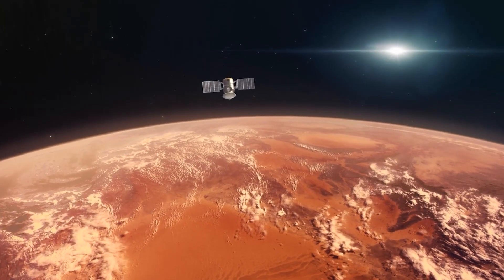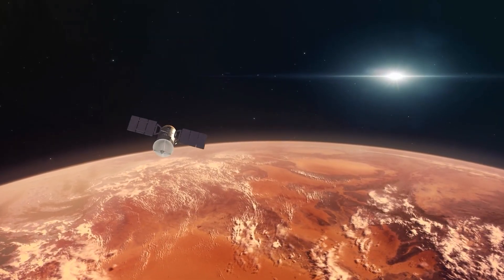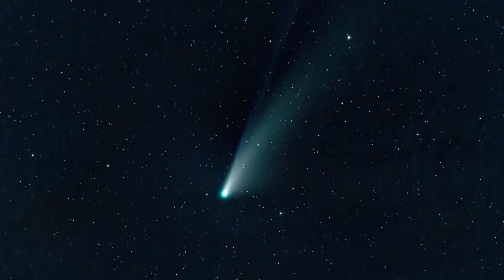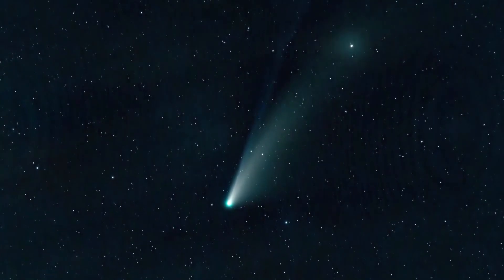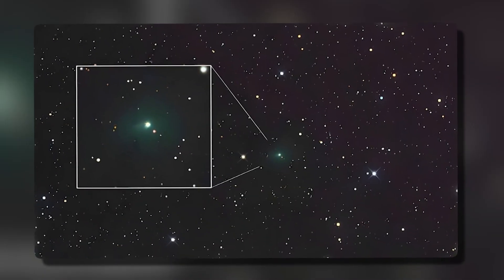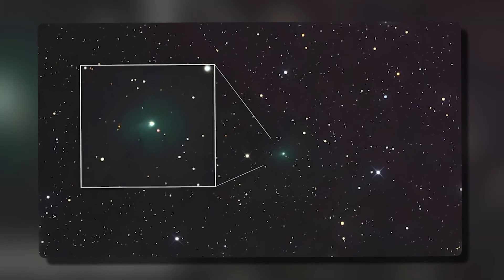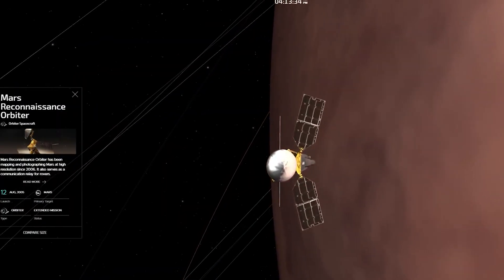A strike on Mars by 3i Atlas is not the kind of event one stages in science fiction. It is a near impossible observational opportunity with consequences that reach far beyond a simple impact flash. The dynamics of the collision, the nature of the object, and the geological and atmospheric response of Mars combine to form a singular cosmic experiment.